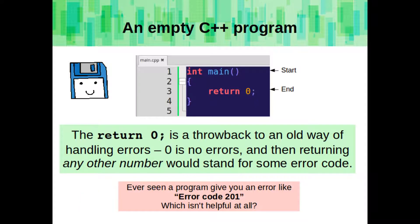The return 0 is a throwback to an old way of handling errors. 0 means no errors, and returning any other number would stand for some error code. Ever seen a program give you an error like error code 201 or some random number? It's not helpful, but that's what that is.